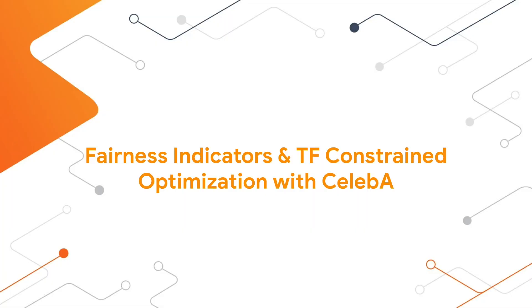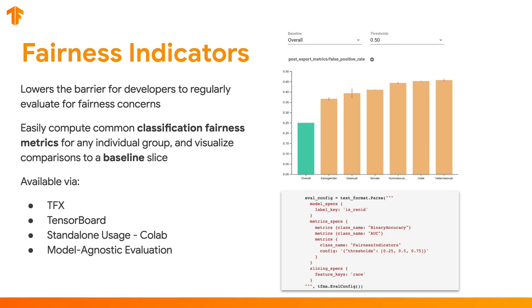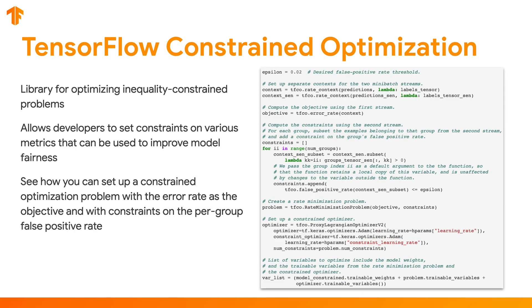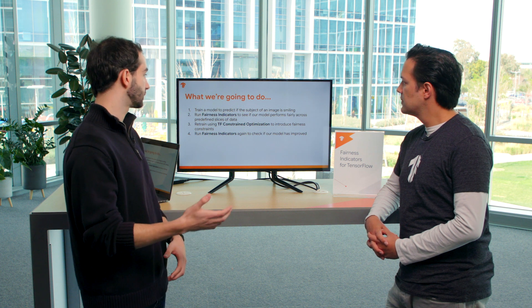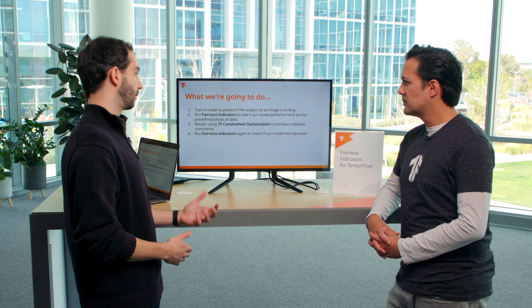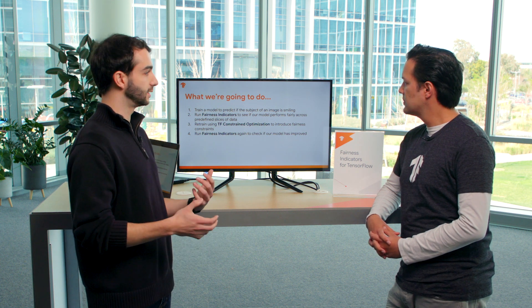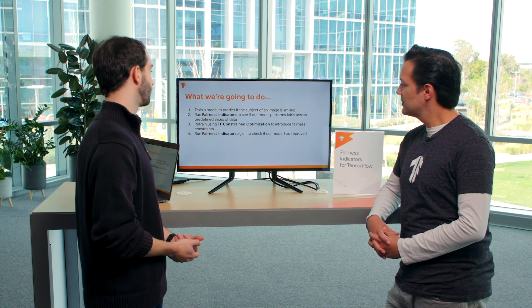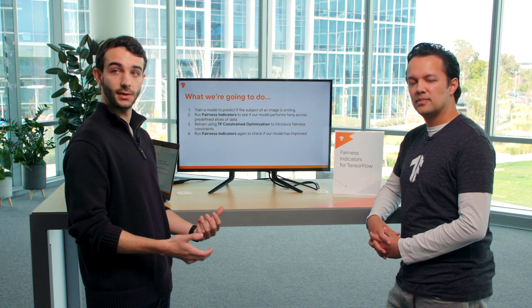Today I'm going to be presenting on Fairness Indicators and TensorFlow Constrained Optimization. Fairness Indicators are a suite of tools that help developers regularly evaluate for fairness concerns. Constrained optimization is a technique where you can introduce a constraint into the model on a specific metric. So today we're going to first train a simple model to predict if a subject is smiling or not smiling in a certain image, run fairness indicators to evaluate this model, retrain using constrained optimization to fix the fairness concerns we may find, and then rerun fairness indicators to see whether we've improved the model.